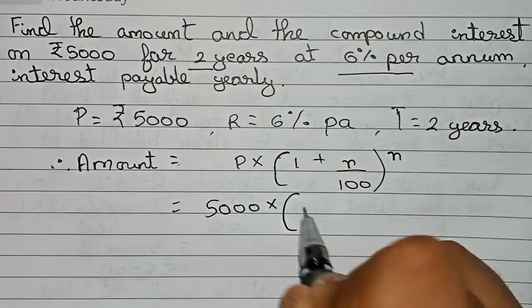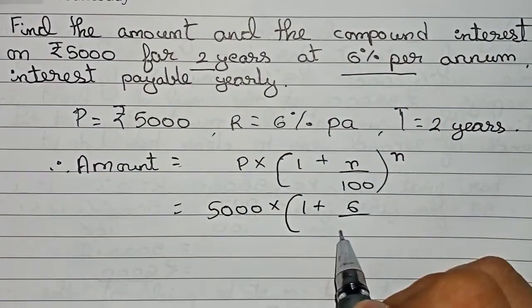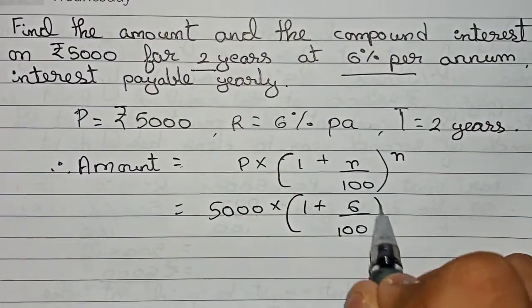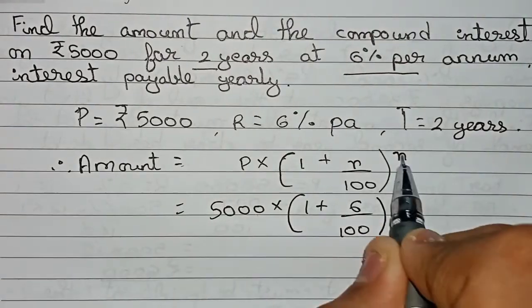So we put the values. The principal is 5000 into bracket one plus R means 6 percent per annum, so 6 by 100, to the power 2 as n equals 2.